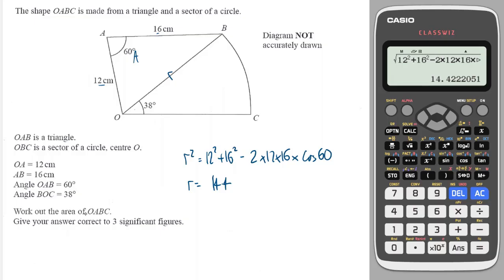And now it's asked me to work out the area of OABC. So the whole shape. Let's start by working out the area of the triangle. And the formula for that is a half times A times B times sine capital C, where the angle is the angle in between the two other sides, A and B.